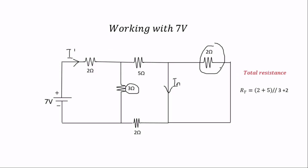When you do that correctly, this resistor has been short-circuited. You're going to get 4.1 ohms which will be the total resistance. We need to find the total resistance which will help us find the total current passing through it.